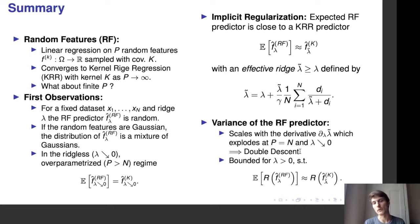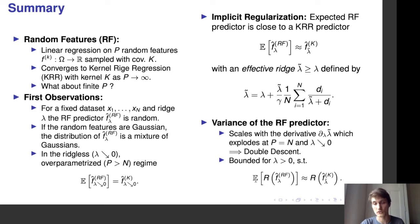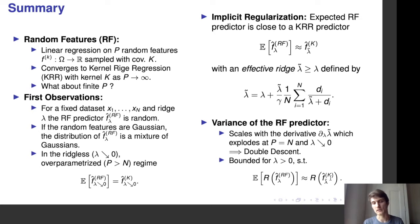However, if you are away from this problematic explosion of variance — for example, if λ is bigger than zero — then you are able to bound the variance of the random feature predictor and show concentration for large p and n. This shows that the expected risk of random features is very close to the risk of the kernel predictor, which means that to study the generalization of random features, we can fall back on results about the generalization of kernel methods, which is very useful.